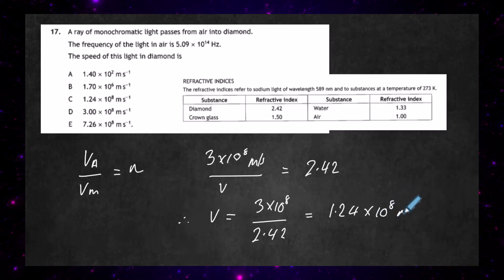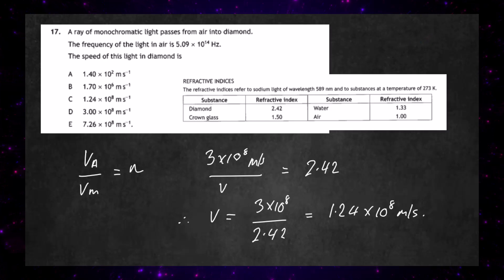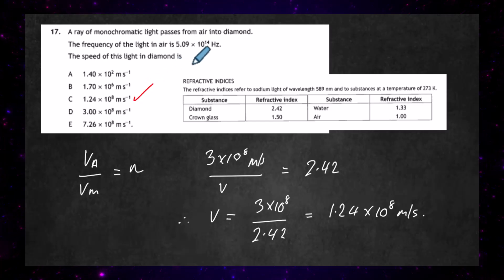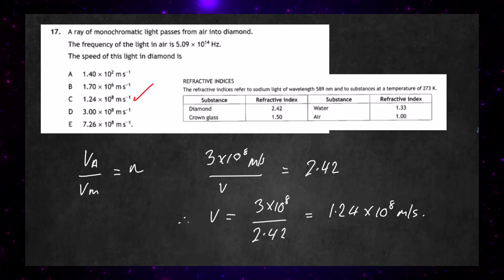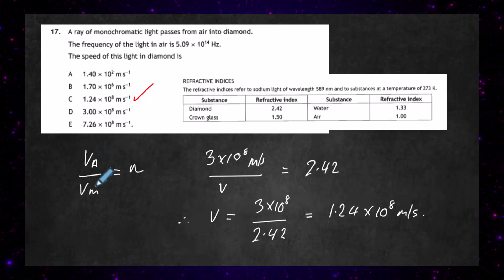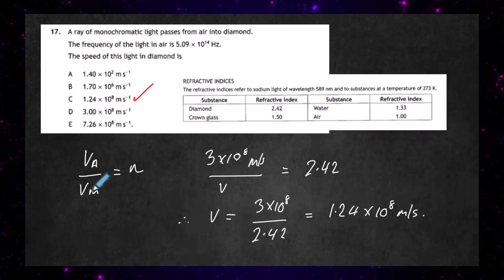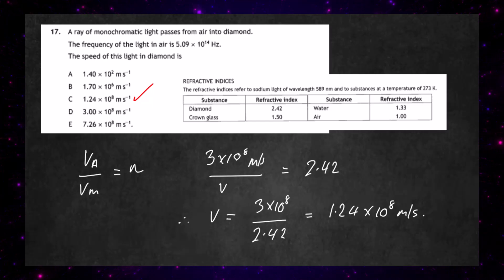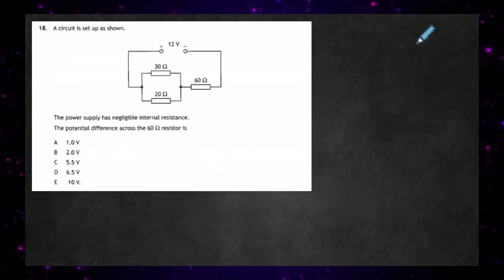The answer we're looking for is 1.24 × 10⁸ m/s, which is option C. It's a simple one — we just need to look up the refractive index for diamond and know that the speed of light in air divided by the speed of light in the medium equals the refractive index. Note that the frequency does not change — it's only the wavelength and direction that change.